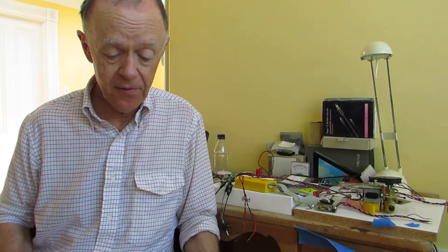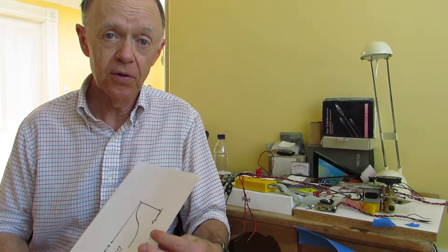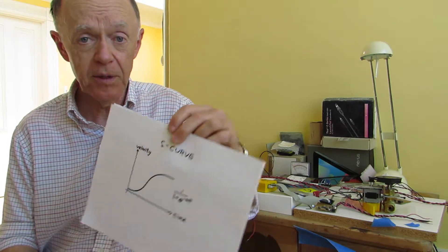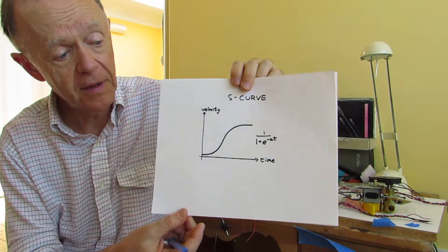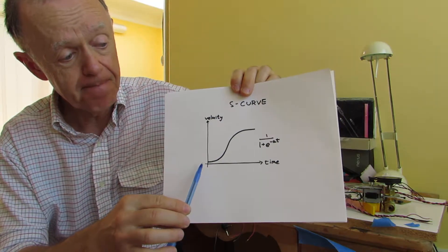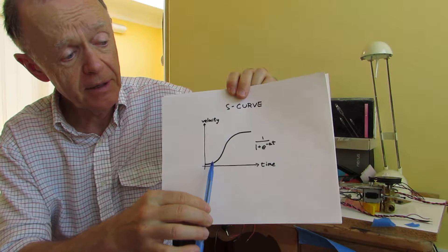There's a couple of unique things about this controller. One of them is the ability to control how the motor accelerates. So we use what's called an S-curve, which is a little bit unusual in this industry. A lot of people don't do this because it's fairly complex.